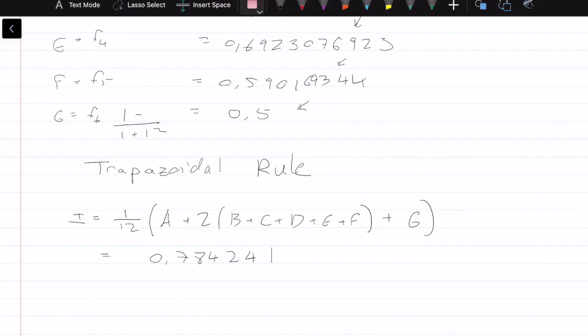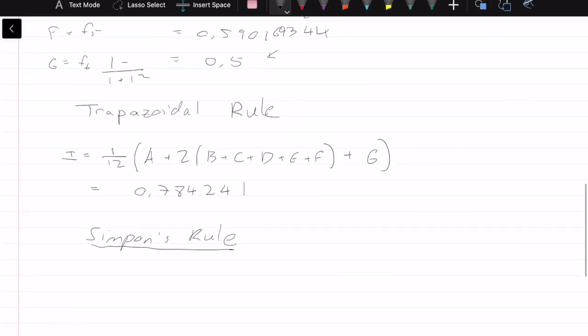Implementing Simpson's rule is also quite easy from here. For Simpson's rule, the integral is equal to N over 3, so that is going to be 1 over 6 times 3 is 18, times the first value which is A, plus 4 times the second value B, plus 2 times the third value, and the pattern continues, D, E, F. Then our final value has nothing, G. The Simpson's rule gives a value of 0.7853979.